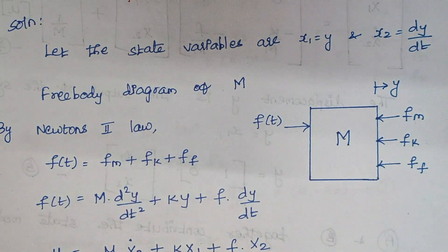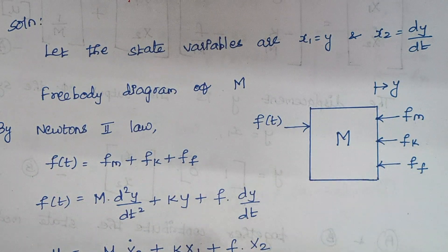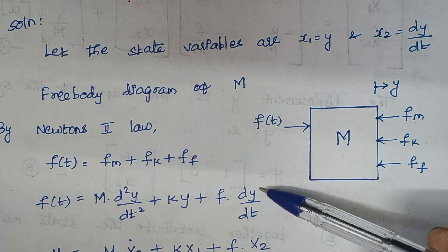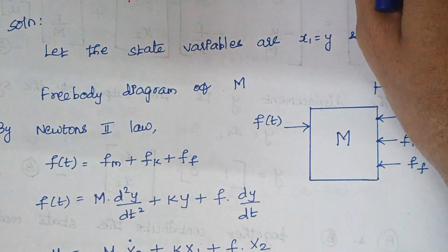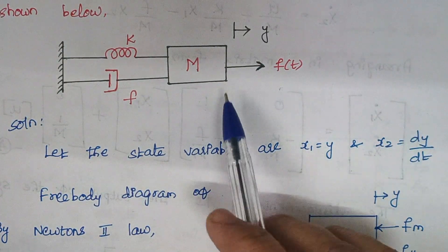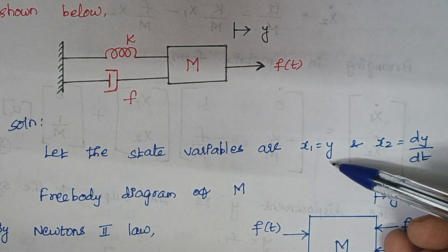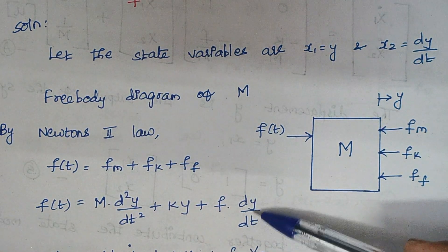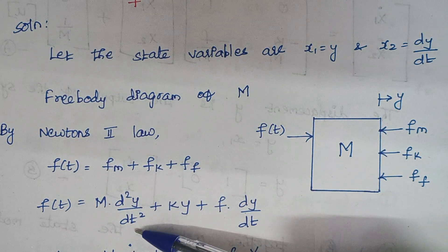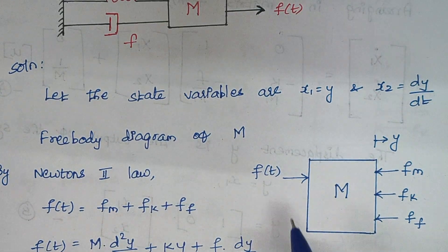After framing the expression, for this problem we will have only one expression like this because there is only one mass. We have dy/dt and d²y/dt² in the equation. The displacement y should be considered as a state variable; therefore x1 is taken as y. When you look at the force balance equation, we have dy/dt and d²y/dt², so dy/dt is considered as another state variable x2.